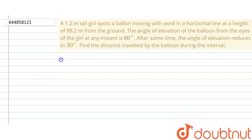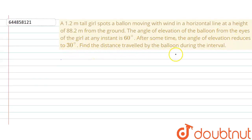The question says: a 1.2 meter tall girl spots a balloon moving with wind in a horizontal line at a height of 88.2 meters from the ground. The angle of elevation of the balloon from the eye of the girl at an instant is 60 degrees. After some time the angle of elevation reduces to 30 degrees. Find the distance travelled by the balloon during the interval.